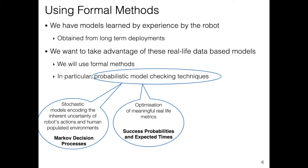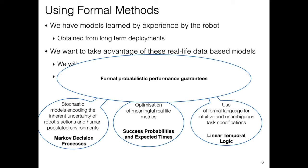Furthermore, we will optimize meaningful metrics, such as the probability of achieving a task, or the expected time to do so. Finally, we will exploit the use of temporal logics to specify our behavior in a flexible manner. Putting these three things together, we are able to provide what we call formal probabilistic performance guarantees.